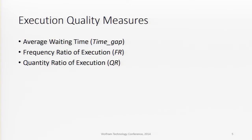In terms of execution quality, we have three measures. The first is average waiting time — the time between the submission of a limit order and the finalization of the same order. We also have two ratios representing the likelihood of execution: the frequency ratio, which is the number of executed transaction messages over the total transaction messages added in the same minute, and the quantity ratio of execution, which is the quantity executed in one minute over the total quantity added in the same minute.